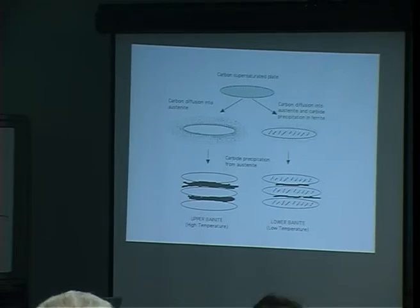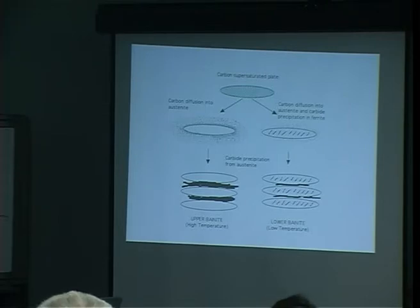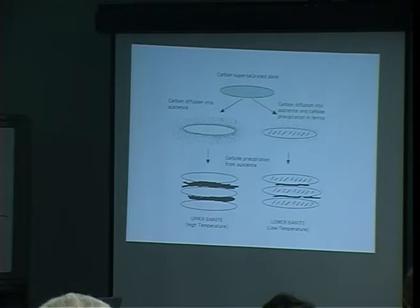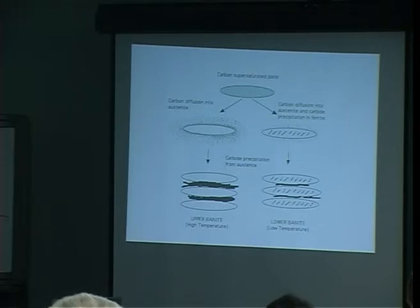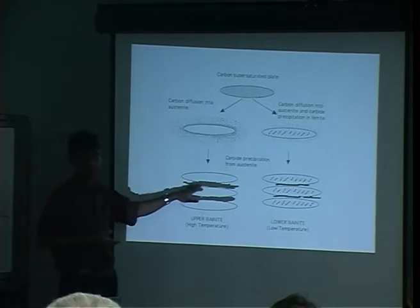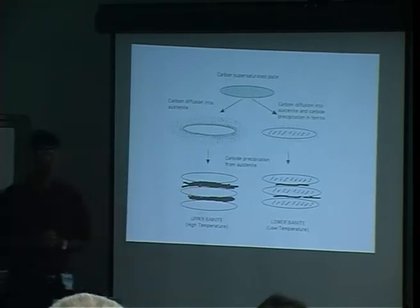Alloying elements will change every aspect because the free energy changes — delta G gamma-to-alpha changes, the free energy of the precipitation process changes — and you may get a different carbide rather than cementite.